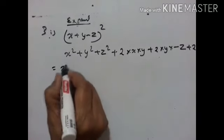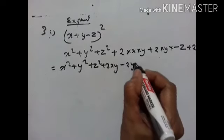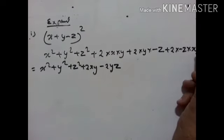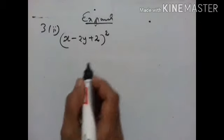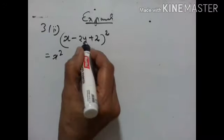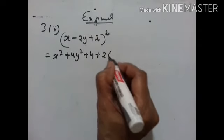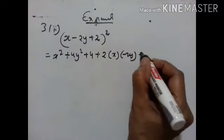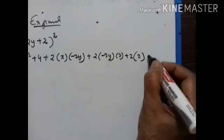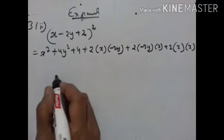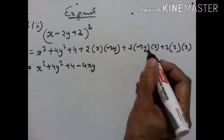This is equal to x square plus y square plus z square plus 2xy minus 2yz minus 2zx. Next problem: (x minus 2y plus 2)² equals x square plus 4y square plus 4, plus 2 into x into minus 2y, plus 2 into minus 2y into 2, plus 2 into 2 into x. This gives minus 4xy minus 8y plus 4x.